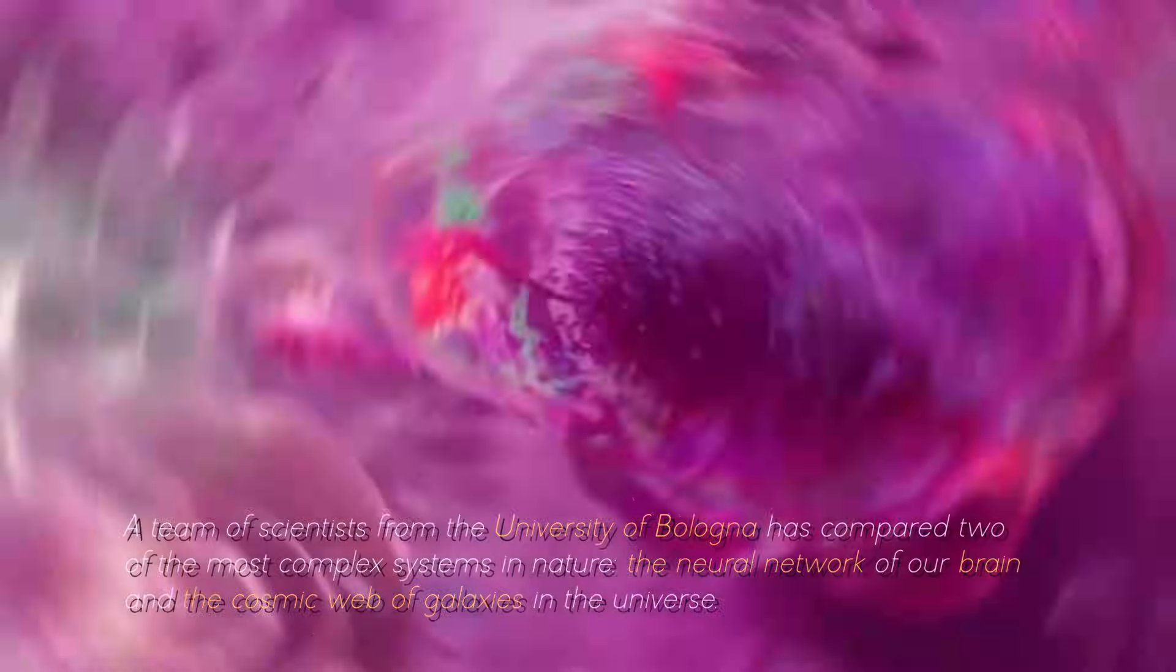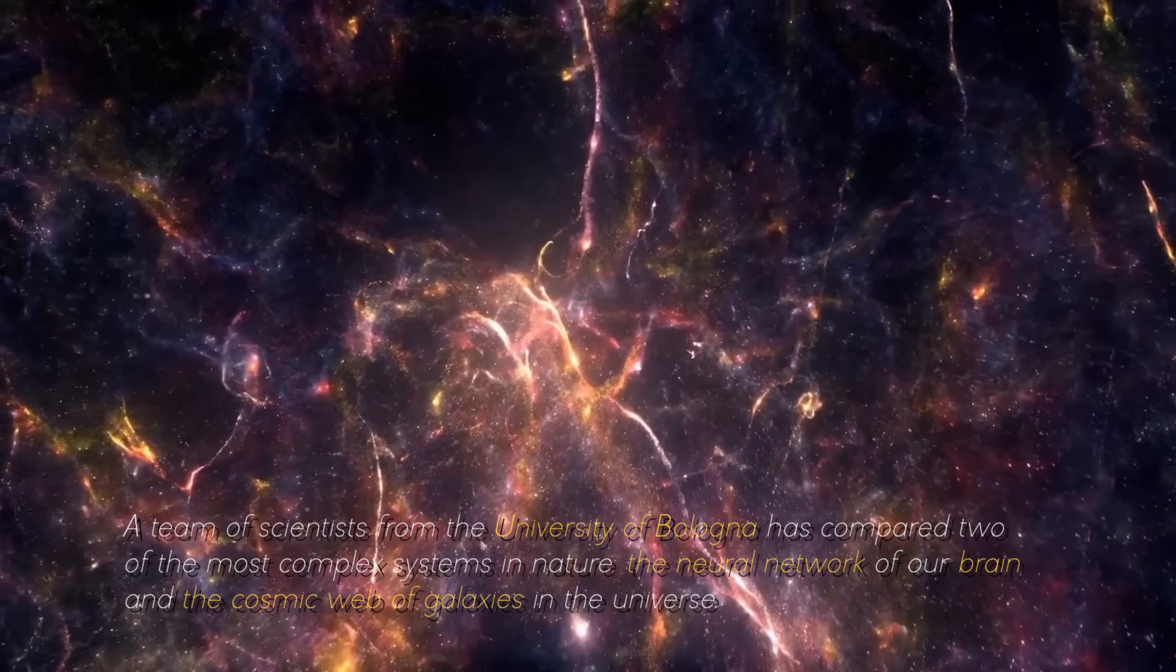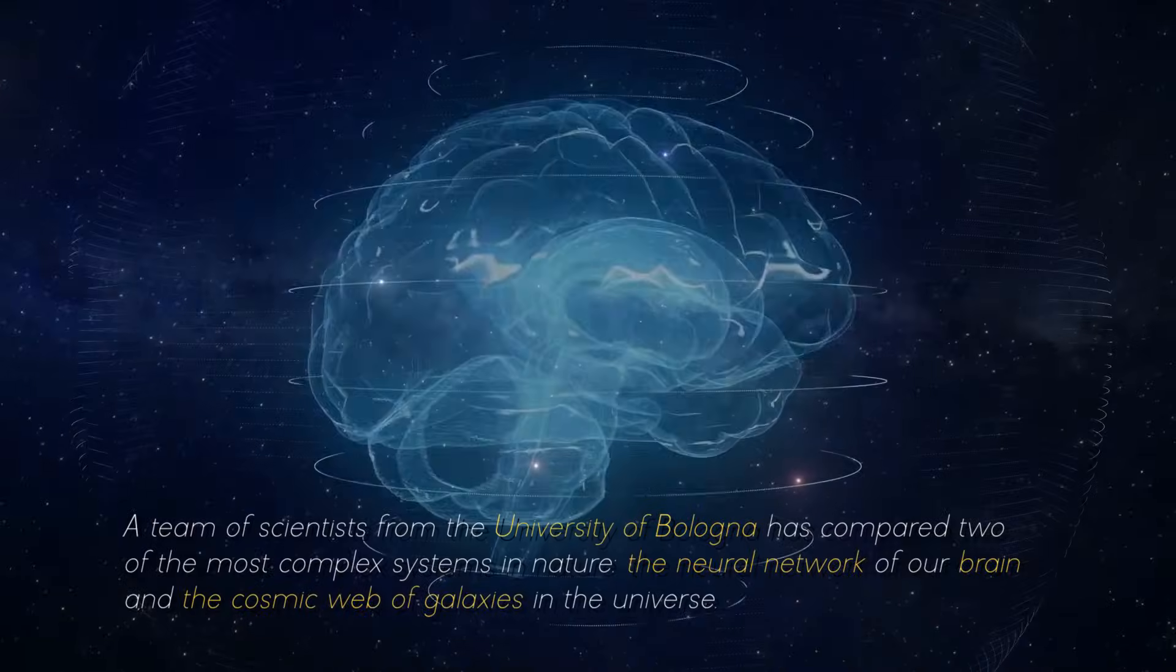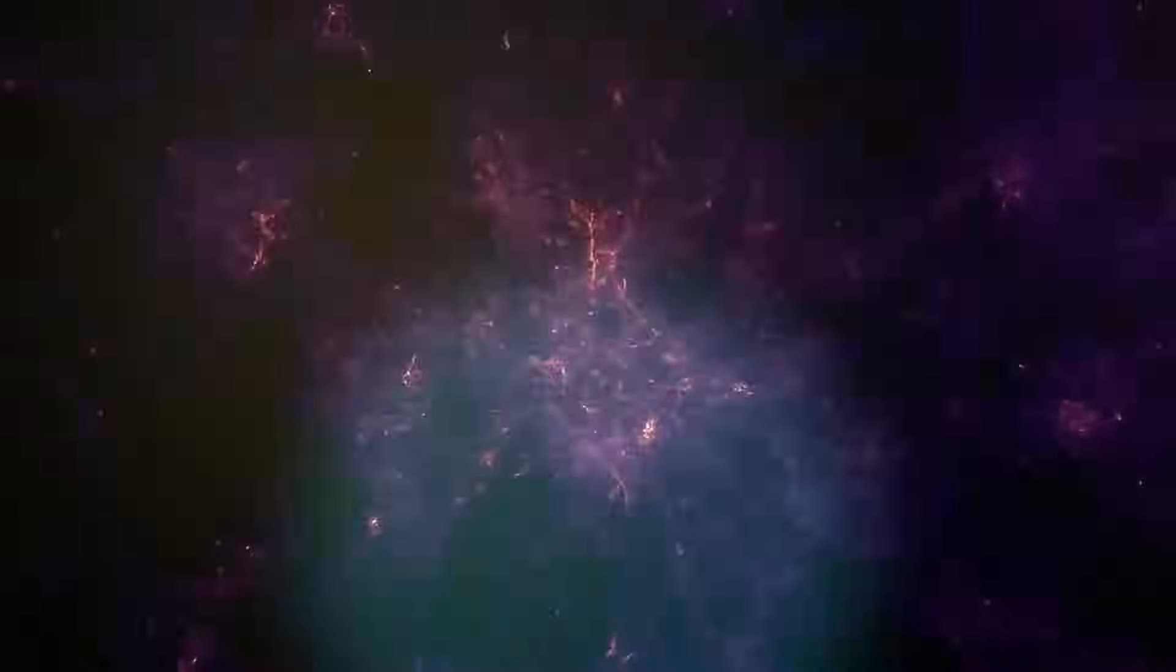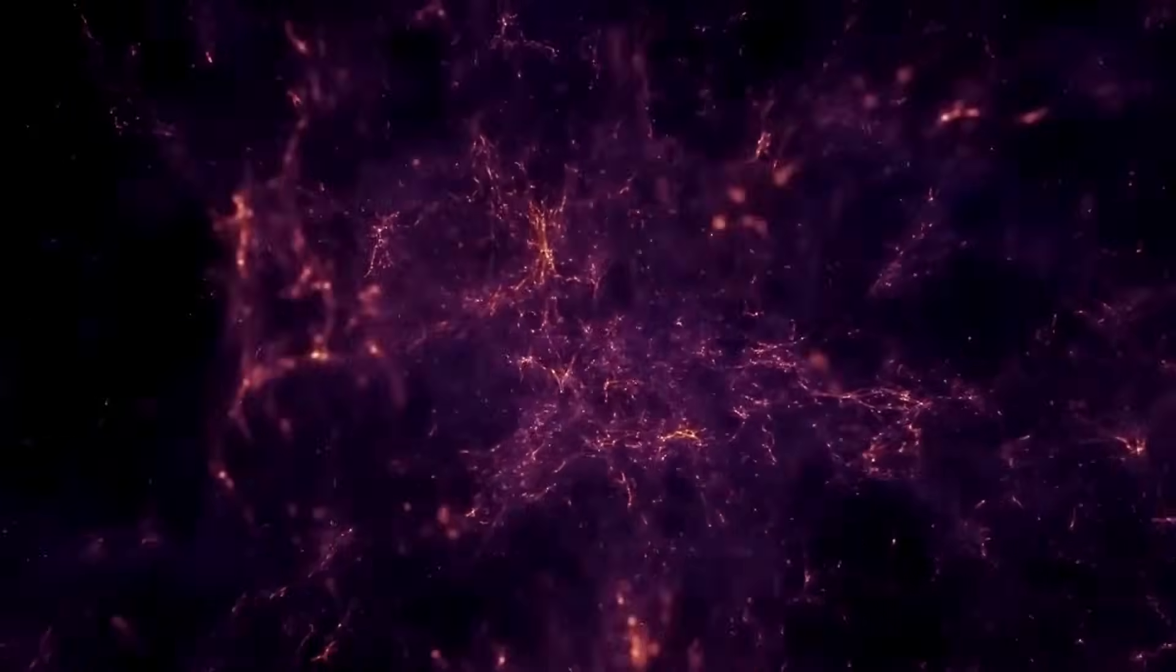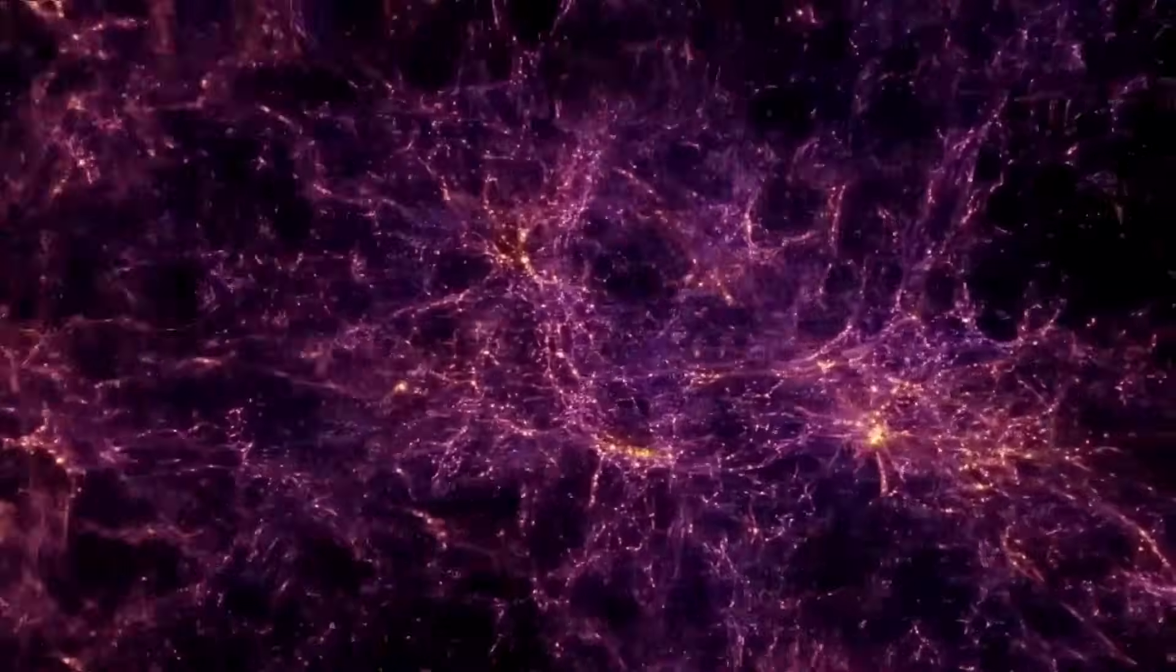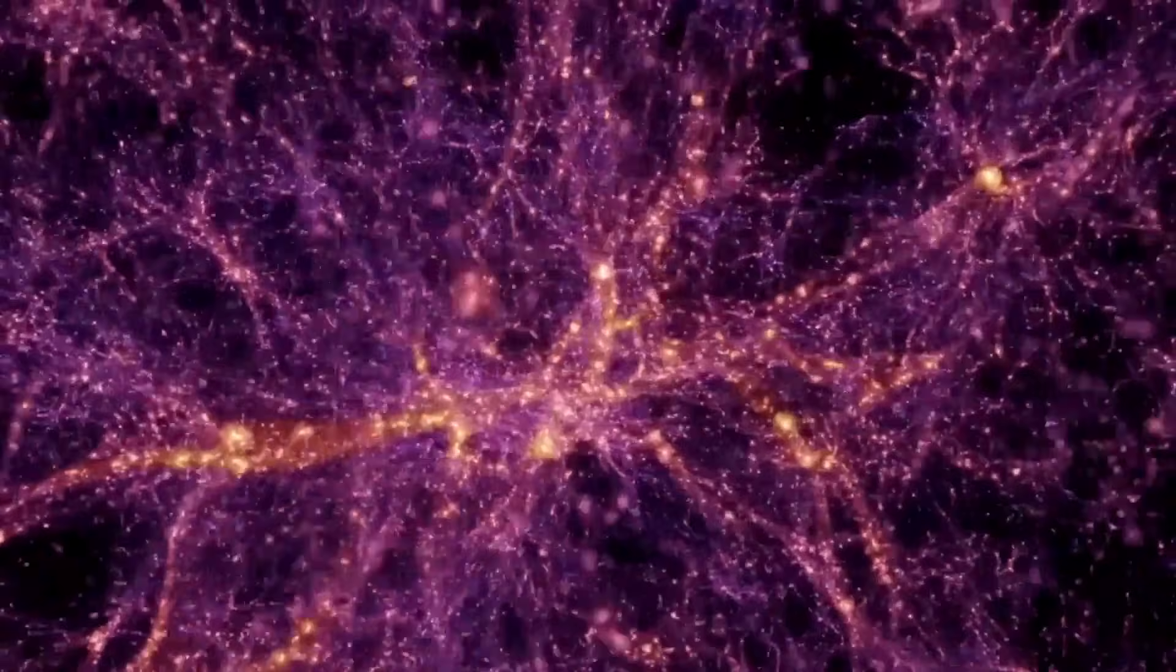A team of scientists from the University of Bologna has compared two of the most complex systems in nature, the neural network of our brain and the cosmic web of galaxies in the universe. What did they discover? That they are incredibly similar. And not just as they look if we compare a human neuron with a cluster of galaxies. There's more.